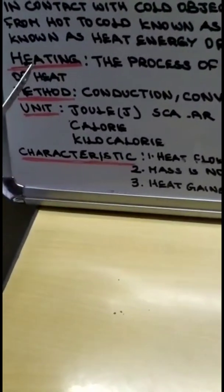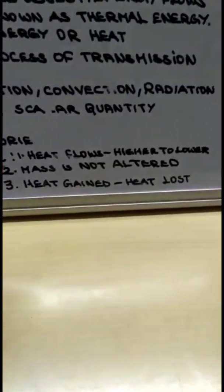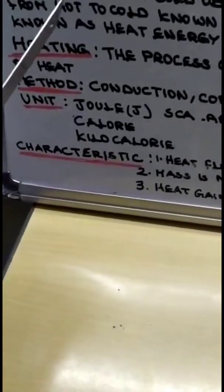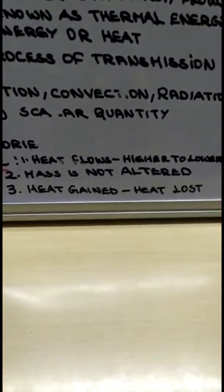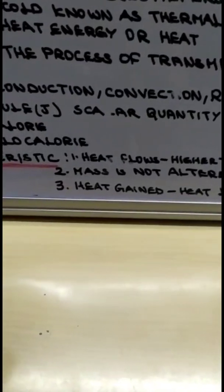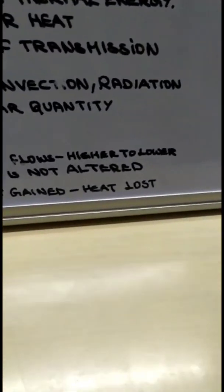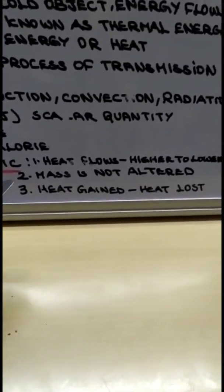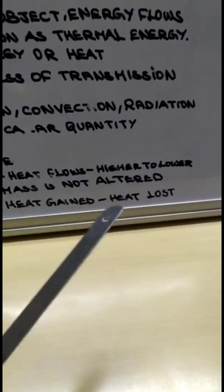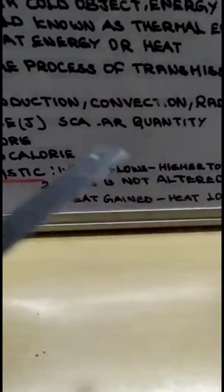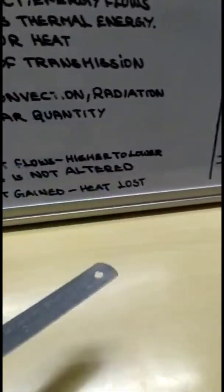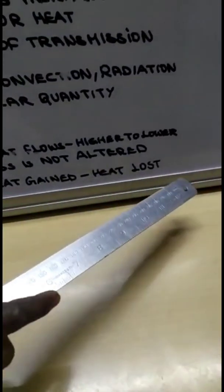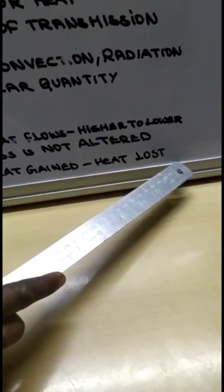So heating is the process of transmission of heat and the method is conduction, convection, and radiation. The unit is joule, calorie, and kilocalorie. And the characteristics are: heat flows from the body of higher temperature to the body of lower temperature, the mass of the system is not altered when it is heated or cooled, and the heat gained is equal to the heat lost. I think now you are clear with all these concepts. In the next class we will see about the rest.